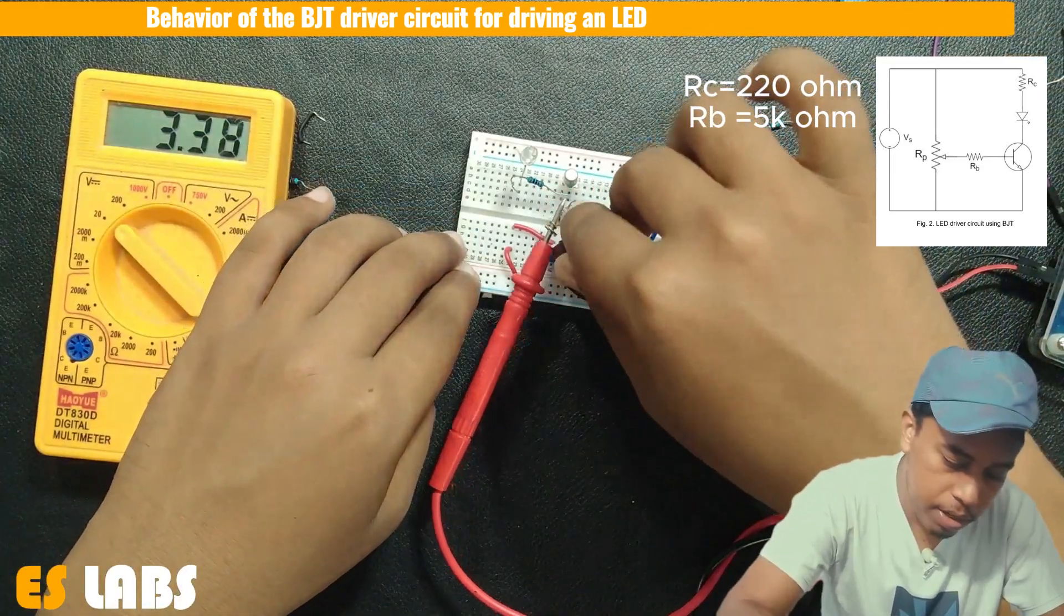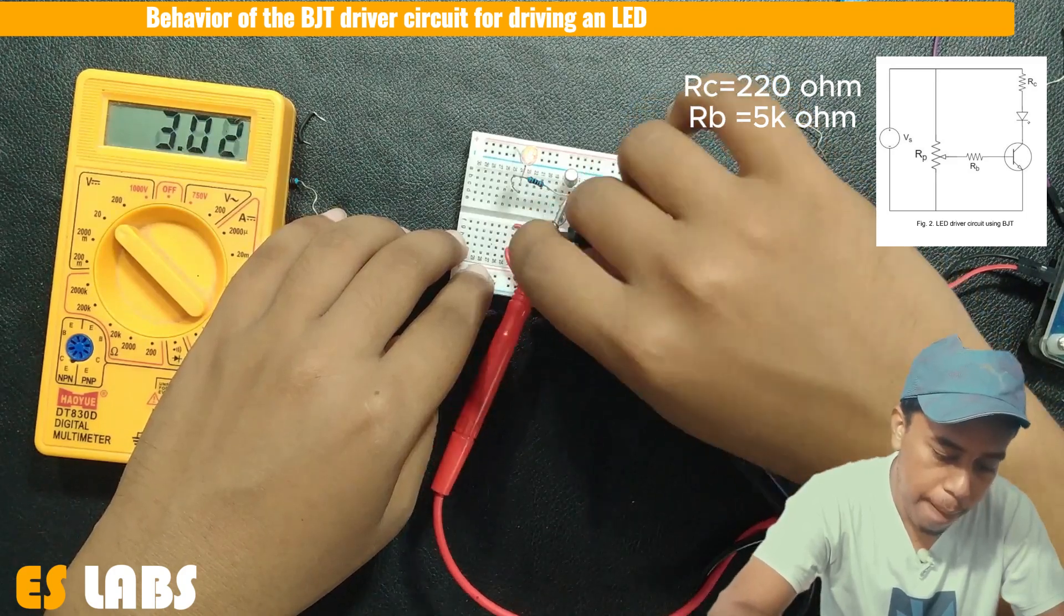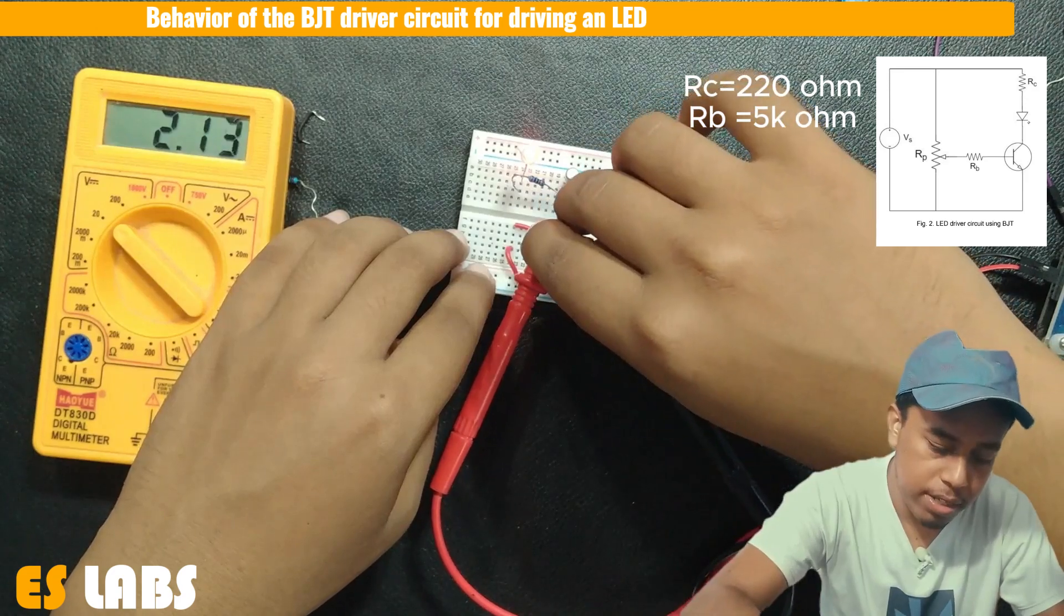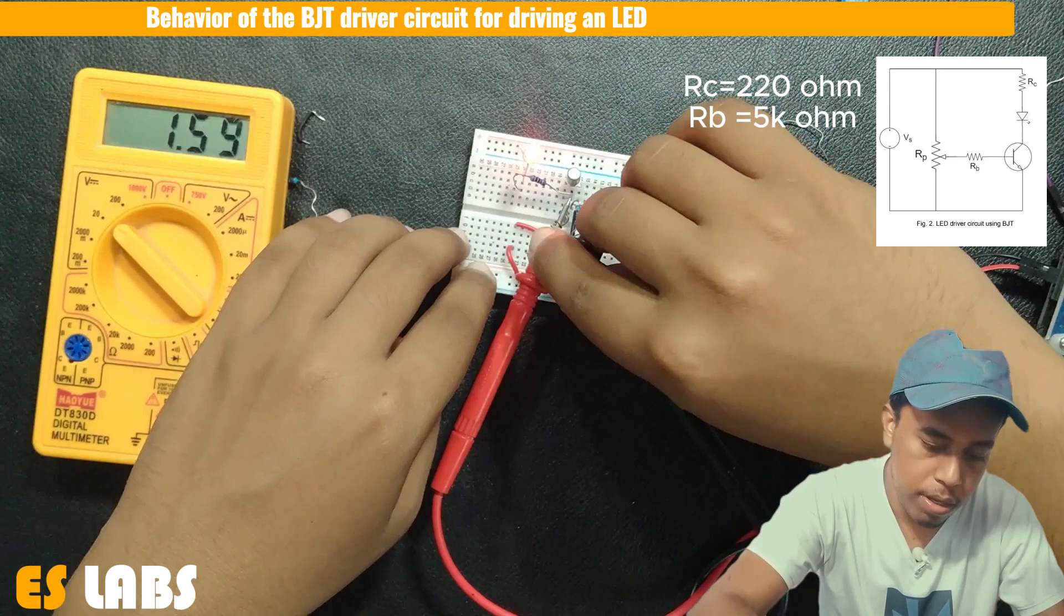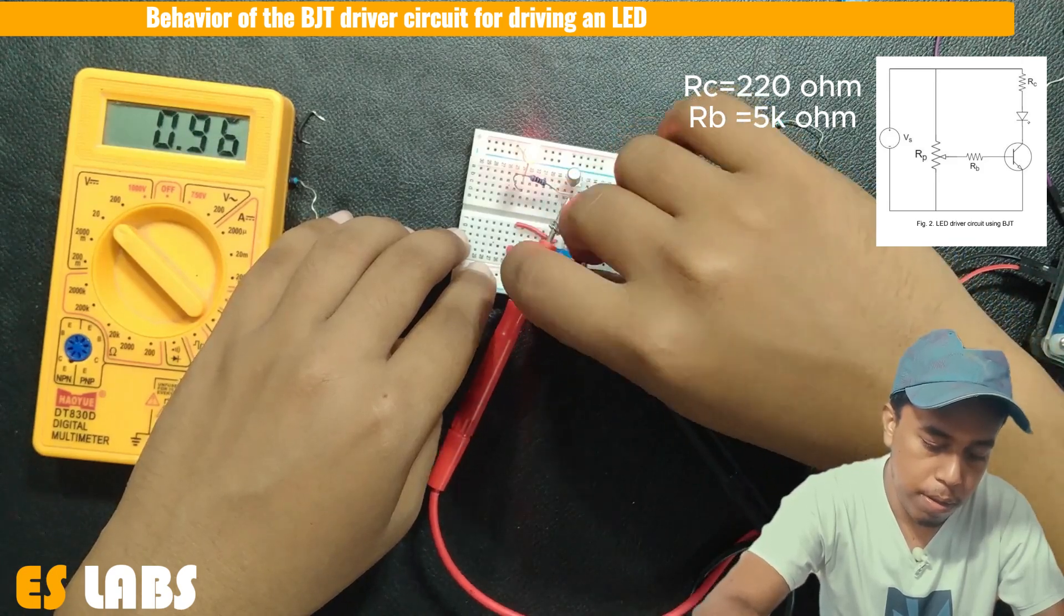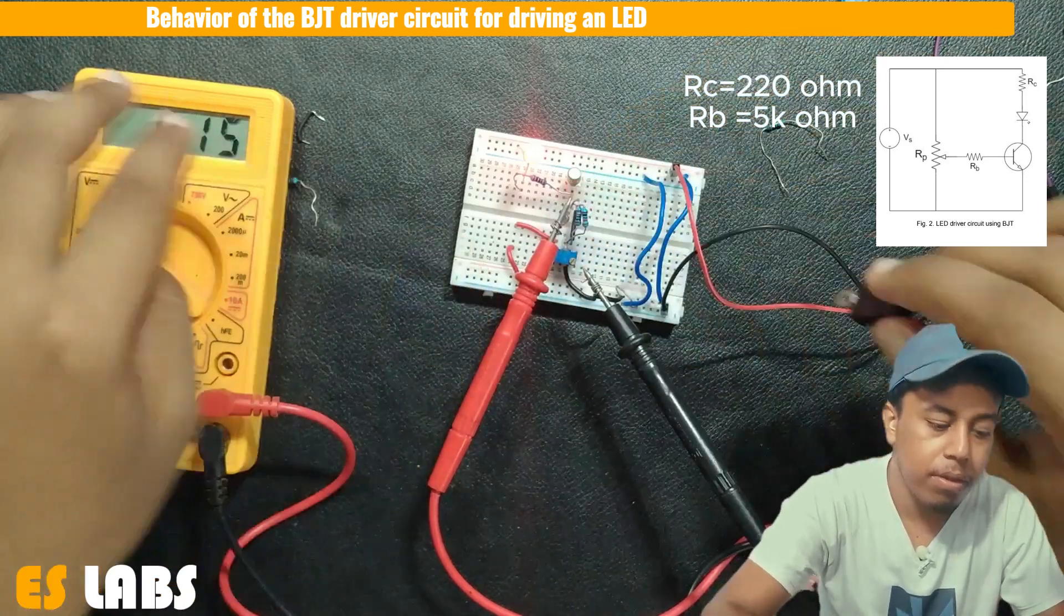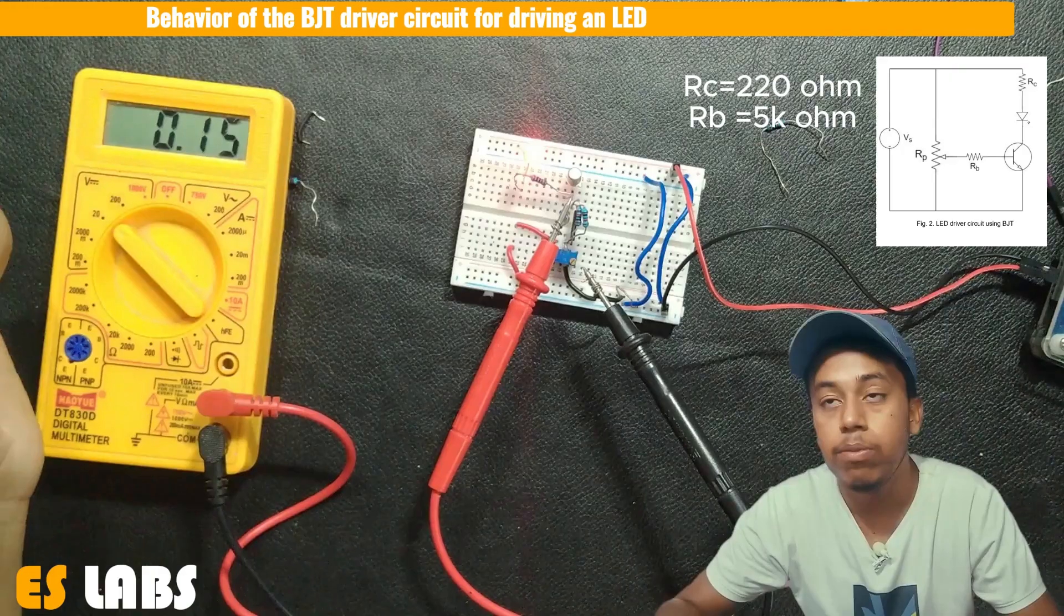Now again, I turn this LED on and measure the voltage. And we can see that voltage is decreasing and LED start glowing. So this voltage now become 0.15 volt and our LED is now glowing fully.